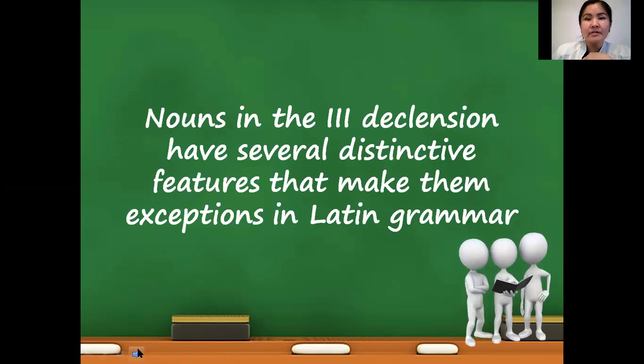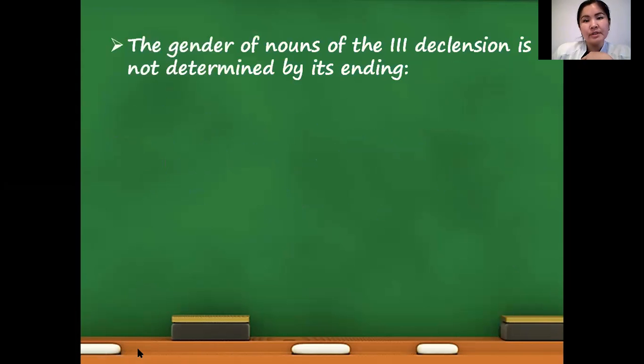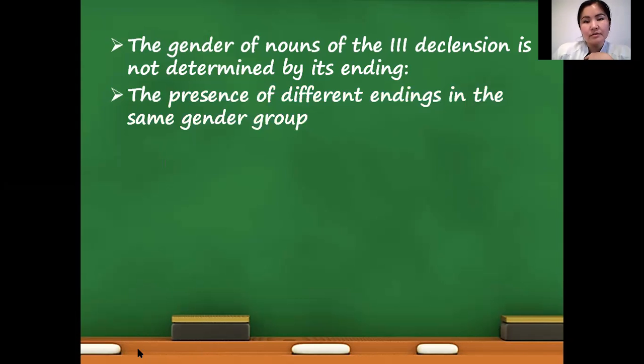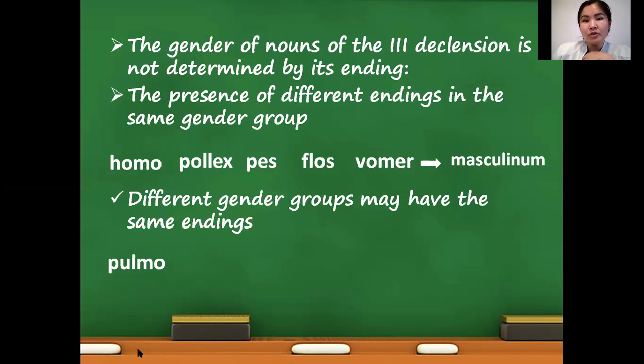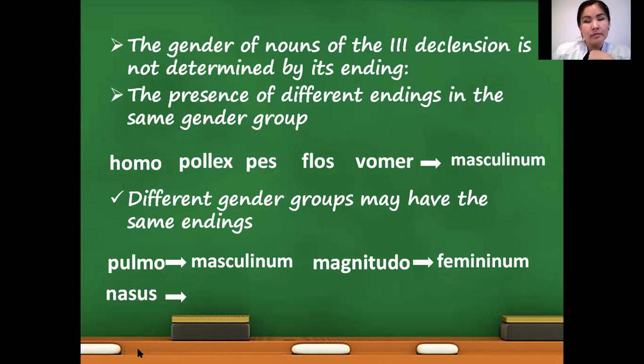For this we have several reasons and first it is impossible to indicate gender of third declension nouns by ending because in one gender ending there can be several gender endings, like homo, pollex, pes, flos, vomer - all these nouns belong to the masculine group. But at the same time in different gender groups you can meet one and the same gender ending which can confuse you, like pulmo ending O masculine, magnitudo also O ending but it is feminine. Or nasus ending US masculinum, and when we have third declension nouns salus US belongs to feminine group and corpus ending US belongs to neutrum group.